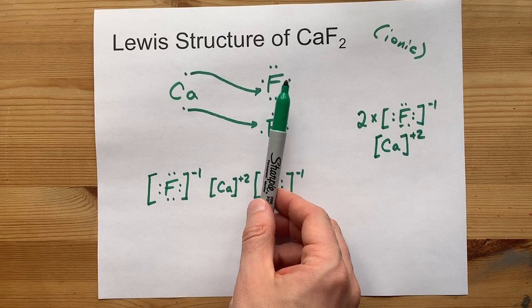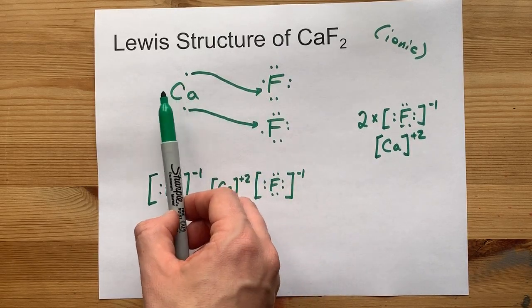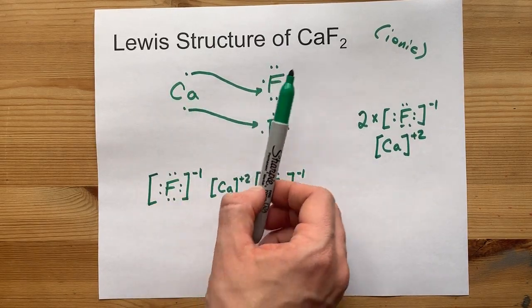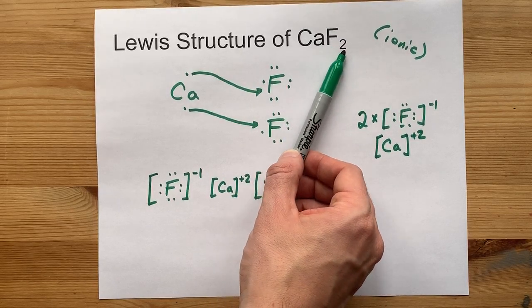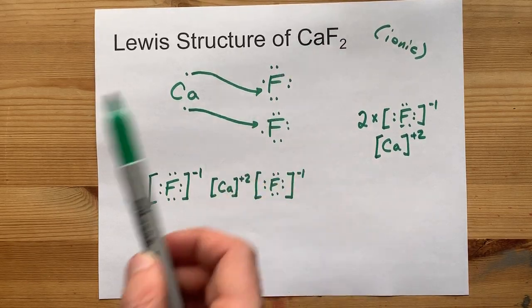I want to point out the fact that you needed two fluorines to absorb all the electrons from calcium is why the formula is CaF2. Two fluorines for every calcium atom.